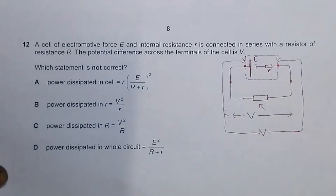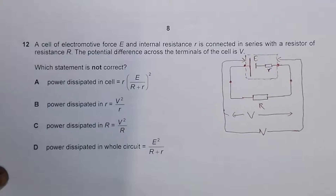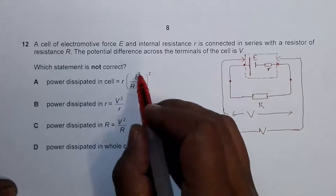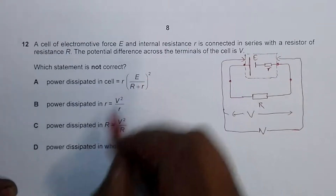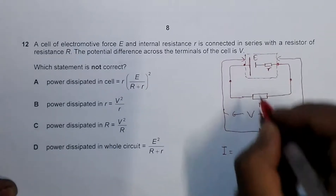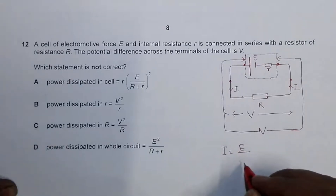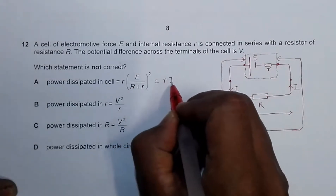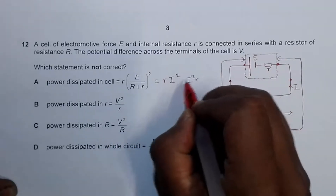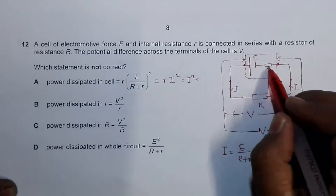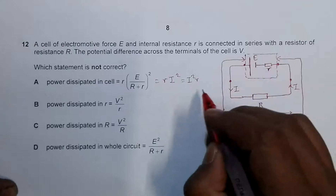It says 'which statement is not correct?' Let's go through the first statement. It says the power dissipated in the cell is equal to small r times I squared. The current in the circuit is given by I = E divided by total resistance, which is R plus r. So power dissipated inside the cell equals I² times small r — current squared into its resistance. This statement is correct.